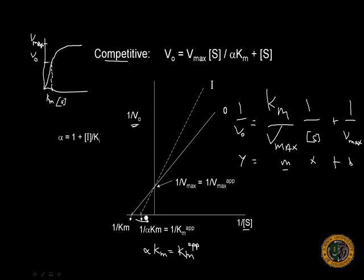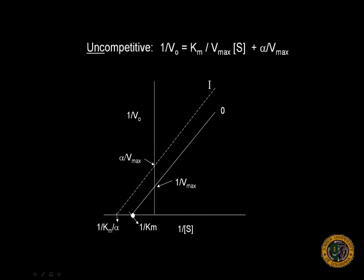The second type of inhibition is uncompetitive inhibition. Here's our equation for the line. And in this case, both our Vmax and our Km changes. The Km decreases, and Vmax decreases in both cases in uncompetitive inhibition.